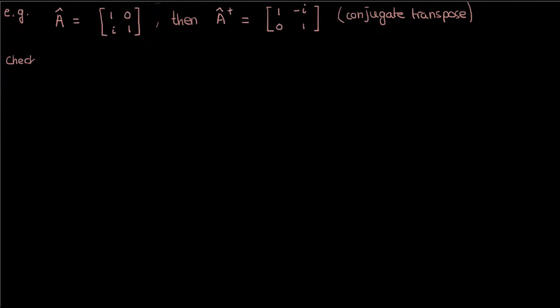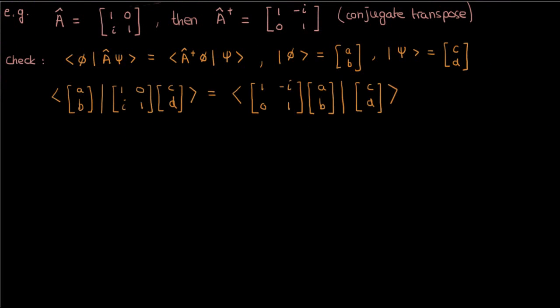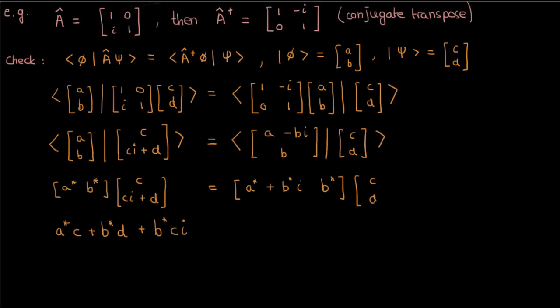You can check that this is true by using the definition of the Hermitian operator. If I had two generic vectors given by phi, which is a, b, and psi, which is c, d, where a, b, c, and d are complex numbers, then if I plug everything into both sides of the definition, simplifying the left-hand side will give me a conjugate times c plus b conjugate times d plus b conjugate times c times i. I can apply the same procedure to the right-hand side and verify that the answer is the same, so the conjugate transpose is indeed the Hermitian conjugate.